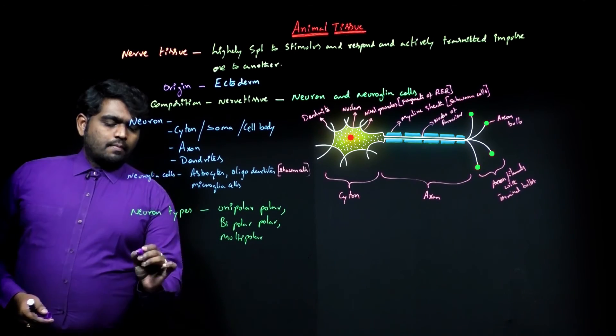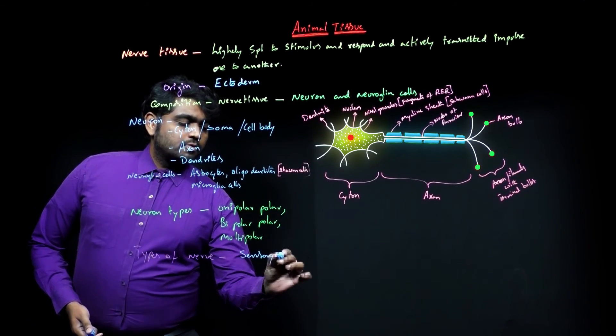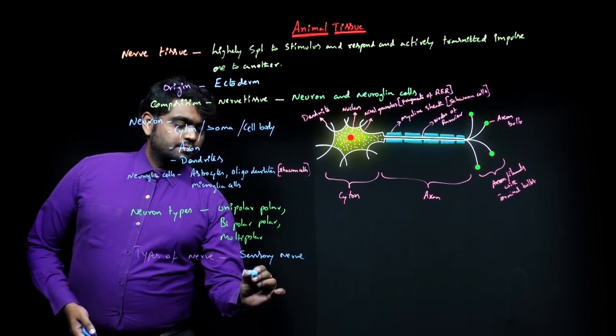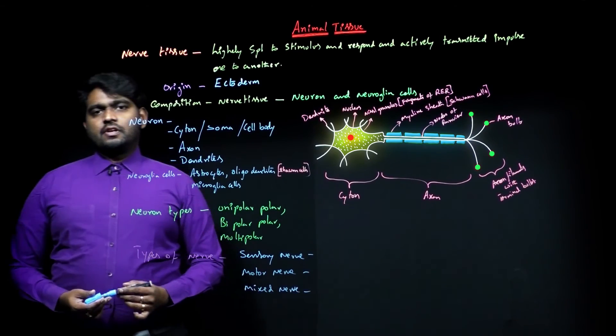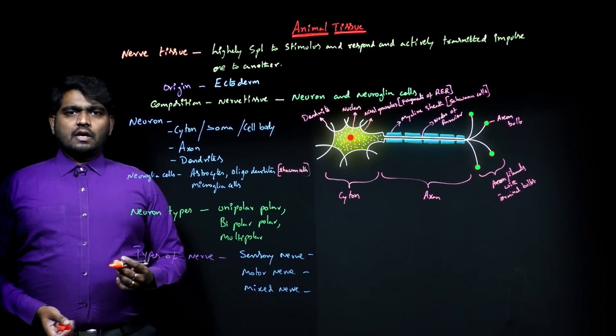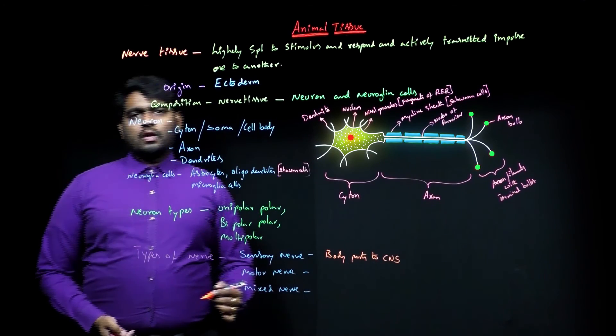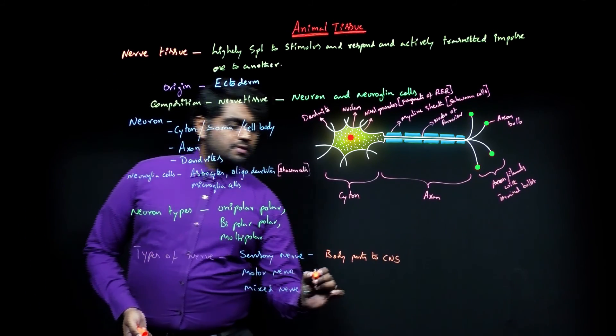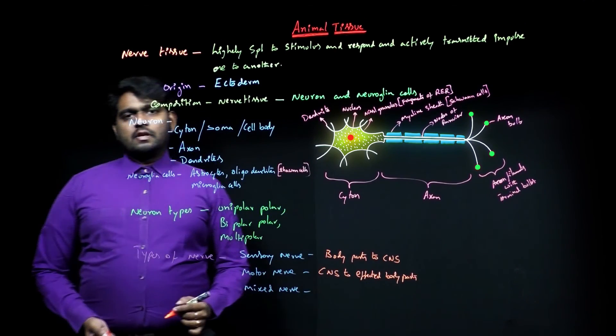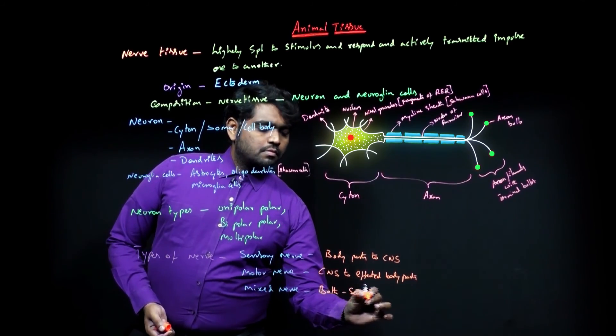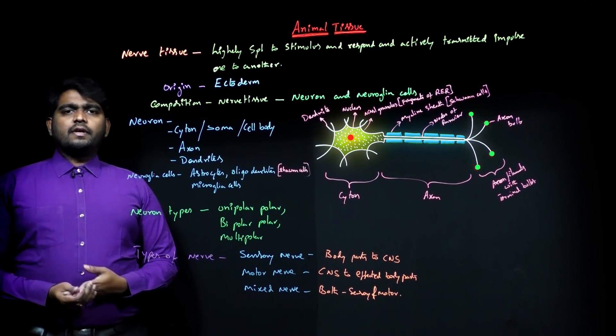And coming to nerves, types of nerves present are: sensory nerve, motor nerve, and mixed nerve. Sensory nerve carries information from body parts to CNS. Motor nerve transfers the impulse from CNS to body parts. Mixed nerve has both sensory and motor. So this is about the complete nerve tissue.